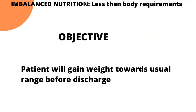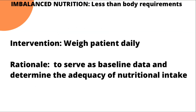Now that we've understood the nursing diagnoses, let's get into the nursing interventions, objectives, and scientific rationale before the evaluation. The objective for the first diagnosis — imbalanced nutrition less than body requirements — is that the patient will gain weight towards their usual range before discharge. You can indicate an exact numeric figure, taking into account the patient's age, or simply state normal range before discharge.